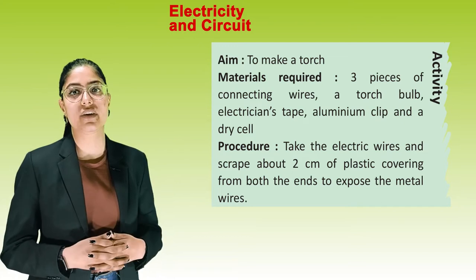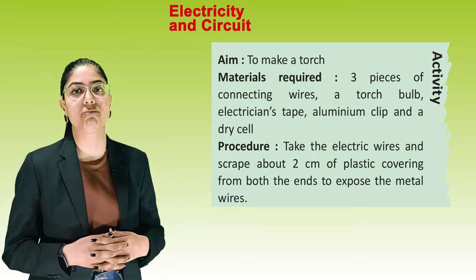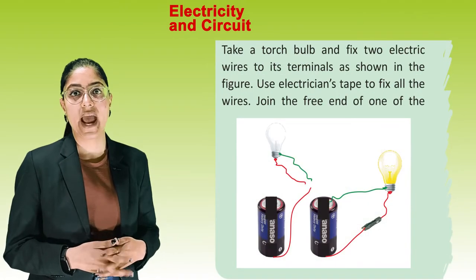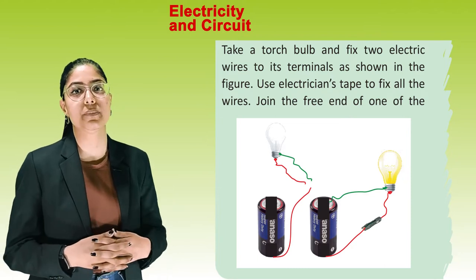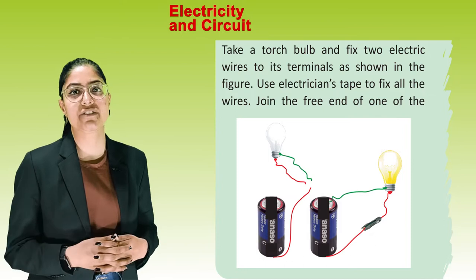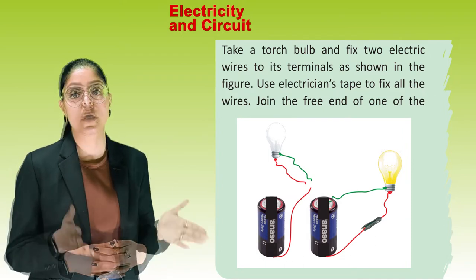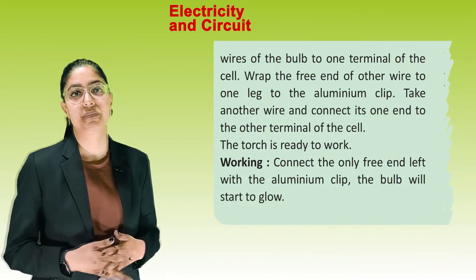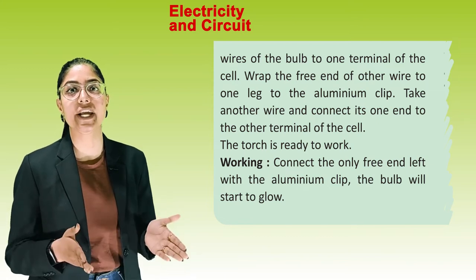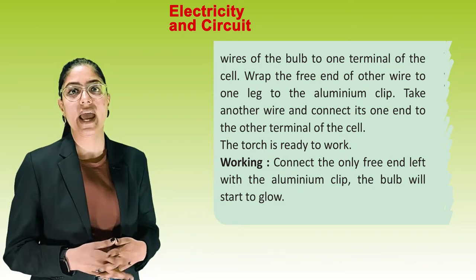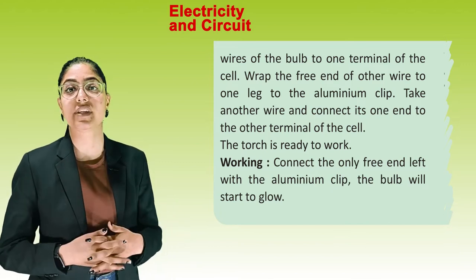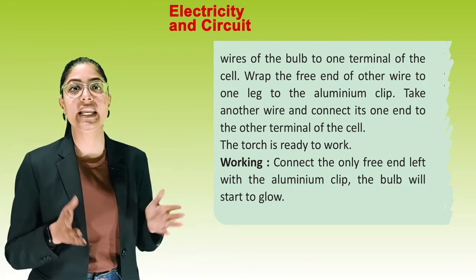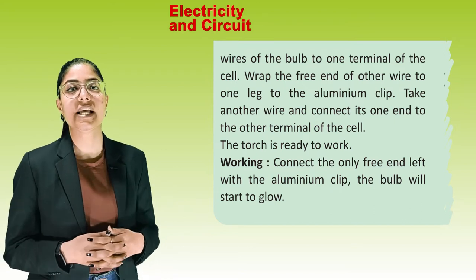Procedure: take the electric wire and scrape about 2 cm of plastic covering from both ends to expose the metal wires. Fix two electric wires to the terminals of the torch bulb as shown. Use electrician's tape to fix the wires. Join one wire of the bulb to one terminal of the cell, and wrap the other wire to one leg of the aluminium clip. Connect another wire to the other terminal of the cell. The torch is ready. Connect the remaining free end to the aluminium clip — the bulb will start to glow.